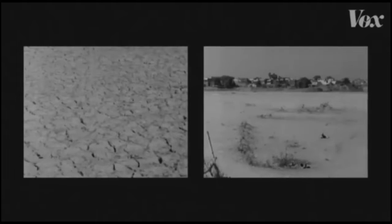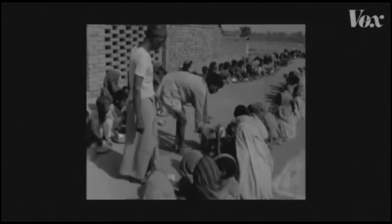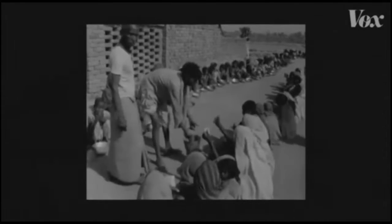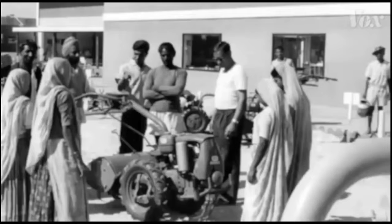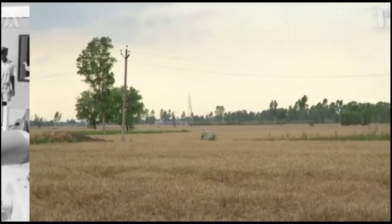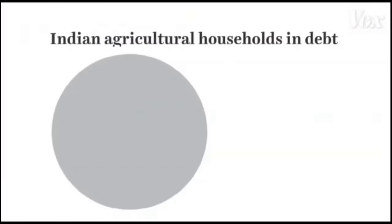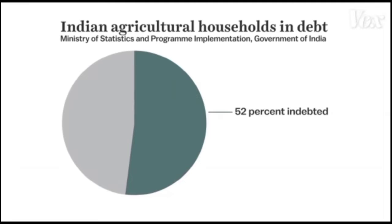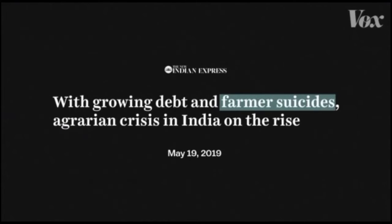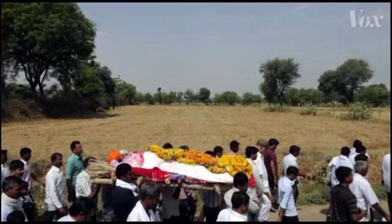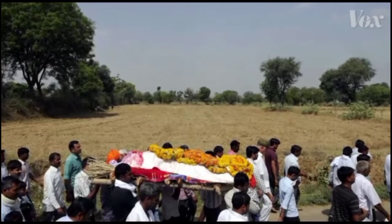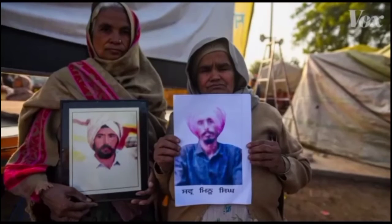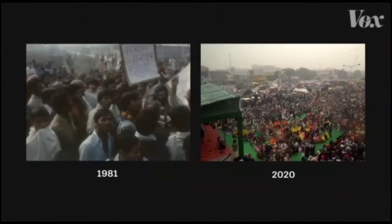Almost 52% of total rural agricultural households were estimated to be under heavy debt. The average annual debt per agricultural household is estimated at around Rs 1,46,000. These trends can be associated with increasing farmers' distress, urban migration, and suicide rates in rural India, especially among farmers.